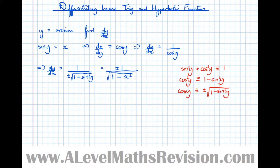But something's not quite right, because a function can't have two gradients at the same time. We can't say it's both +1 over that and −1 over that. So let's look at the graph of the arcsin function to see whether it's the positive or the negative we need.